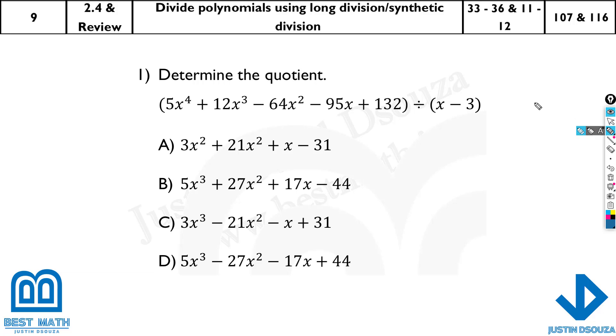Some people find multiplication easier than division. So if you multiply the divisor, with the correct answer you must get the question back, the dividend back. So x minus 3, multiply all of these, whichever gives you this part, that is 5x^4 and so on, is the correct answer as well. But that takes a long time. You have to multiply a maximum of four times.